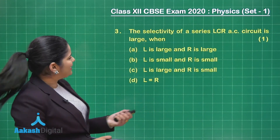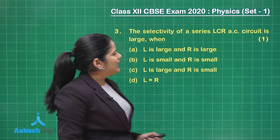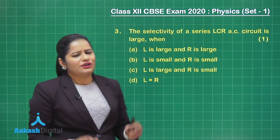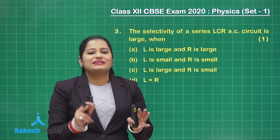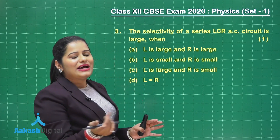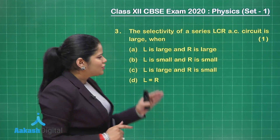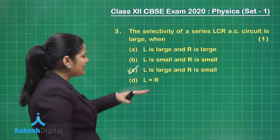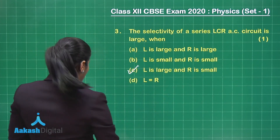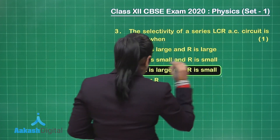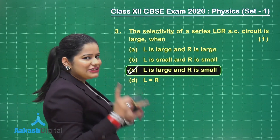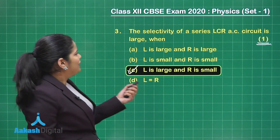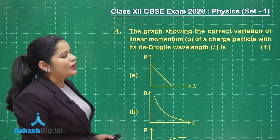The next question says the selectivity of a series LCR AC circuit is large when — we know the selectivity is large when inductance is large and resistance is small. Looking at the options, option C is correct: L is large and R is small. Marking this option gets you one mark.